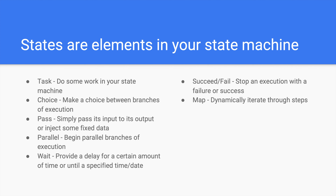Now, you've heard me mention states, tasks, choices — what exactly are these? Well, a state is an element in your state machine, and this state machine is something you create to define the states or steps of your workflow. Tasks or choices are the kinds of states that you can define in your state machine, and there are actually several of these states. A task state represents a single unit of work performed by a state machine.